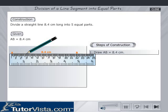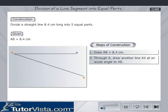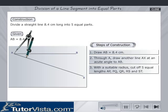Draw AB equals 8.4 cm. Through A, draw another line AX at an acute angle to AB.